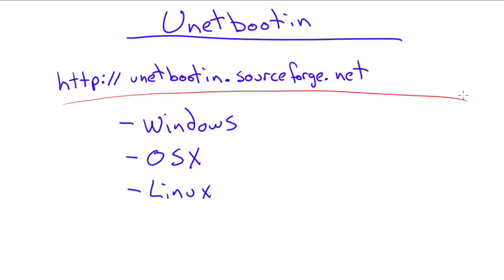The cool thing about Unetbootin is it will make USB drives that are bootable to install Linux in many, many different varieties — and it's cross-platform as well. You can download it for Windows, OS X, or Linux. We're going to use Windows today, which I know is unlike me — I'm normally the Linux guy. But most people are going to be coming from Windows and wanting to use Windows to download and set up their Linux machine, so we're going to do that and download Unetbootin and see how it works.